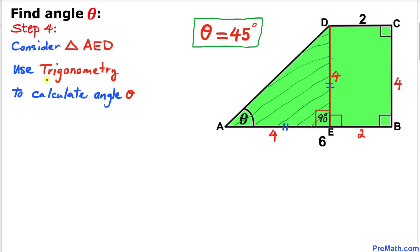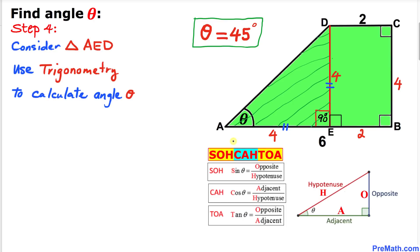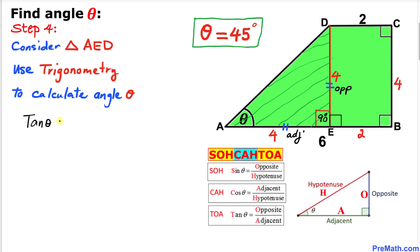Now let's focus on right triangle AED once again, and this time I'll show you how to use trigonometry to calculate angle theta. Using the SOH-CAH-TOA trigonometric ratios table, this side is our adjacent and this side is our opposite. We can apply tangent theta = opposite / adjacent, so tan(θ) = 4 / 4.